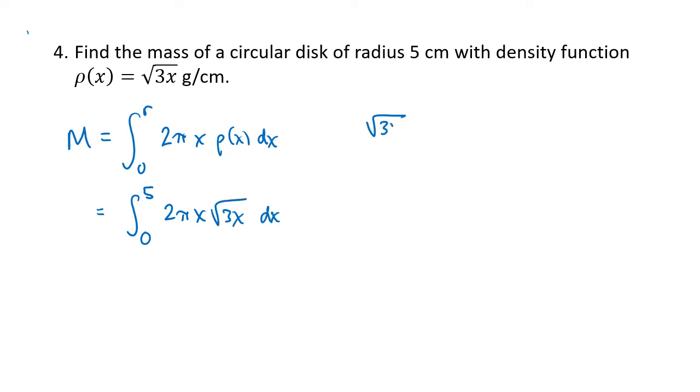Now, to help us out here, we can rewrite the square root of 3x as the square root of 3 times the square root of x. We've got a 2, we've got a pi, we've got a square root of 3. All of those we can pull out of the integral because those are all constants. So 2 pi radical 3, and we've got the integral from 0 to 5. x times the square root of x, we can think of that as x to the first times x to the 1 half, which is x to the 3 halves. We add those exponents together. So this is x to the 3 halves power.